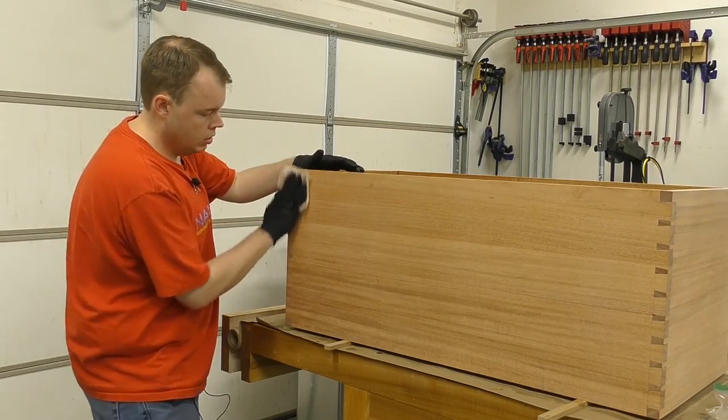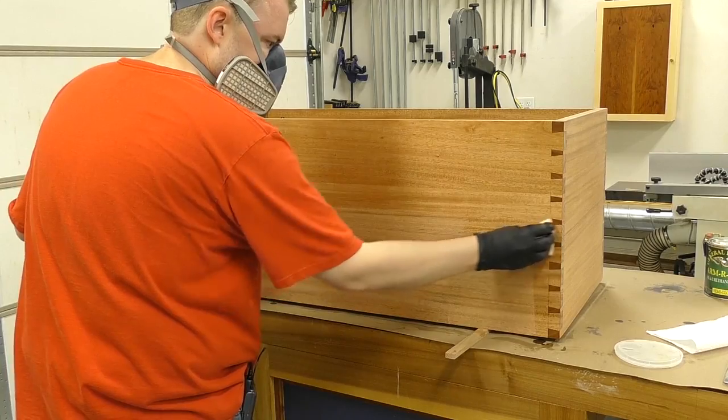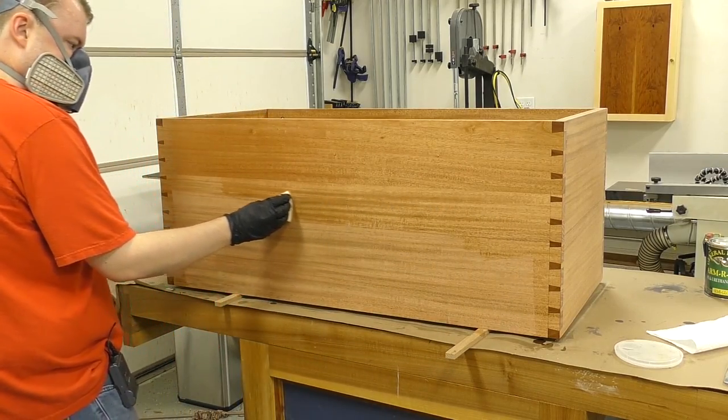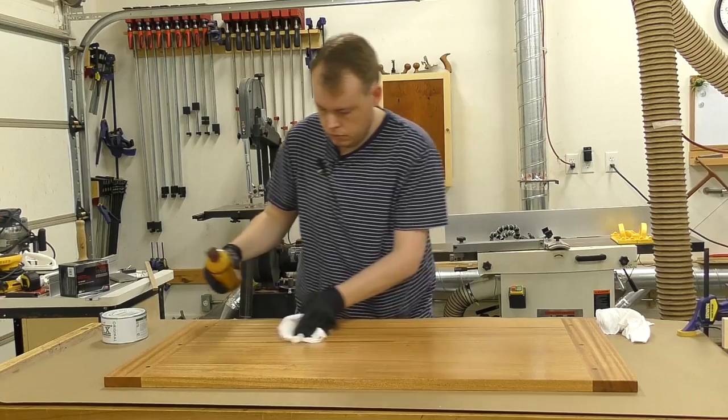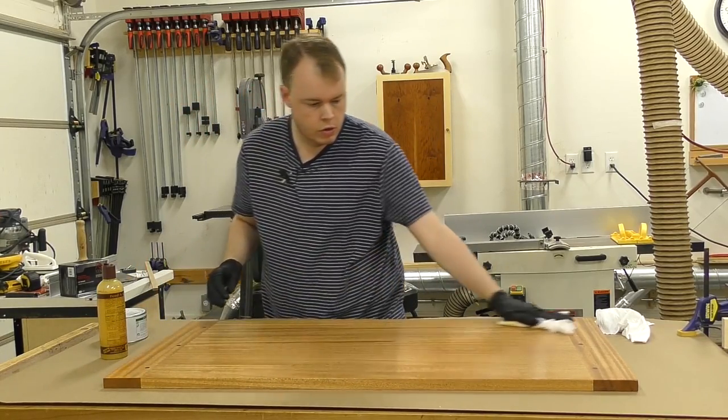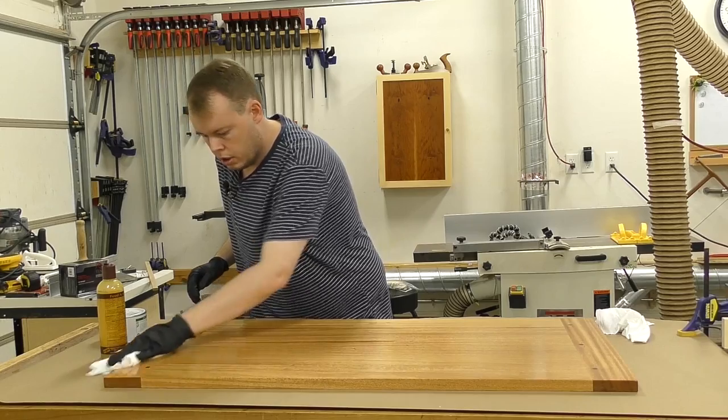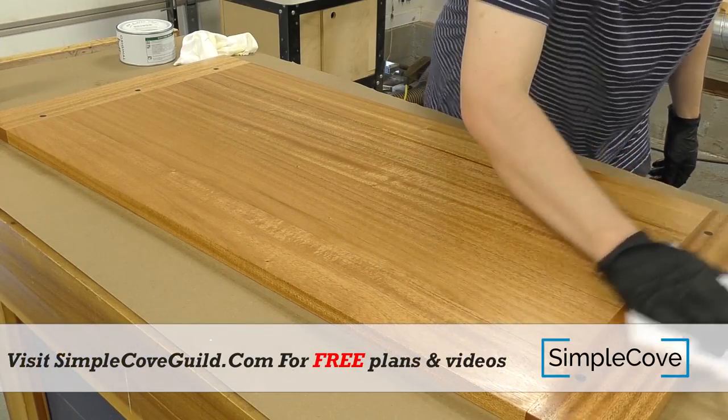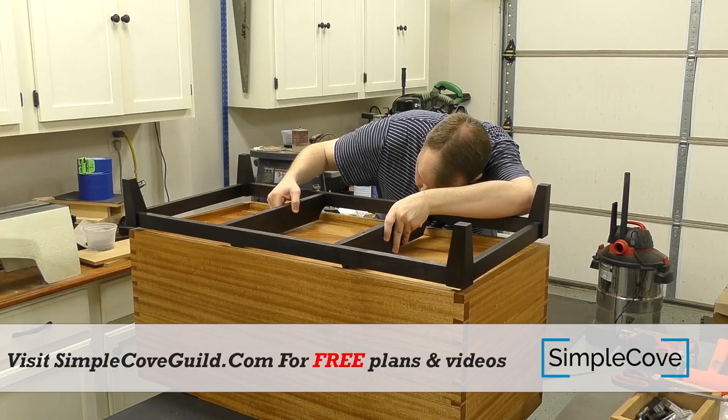After each coat, I sanded it with 320 grit sandpaper, removed the dust with a tack cloth, and then applied the next coat. After the fourth coat, I let it set for about a week and then finished sanding the surface using a 2000 grit sandpaper. And then I applied a thin coat of a paste wax, letting it set for 15 minutes, and then wiping off the excess with a clean cotton cloth.